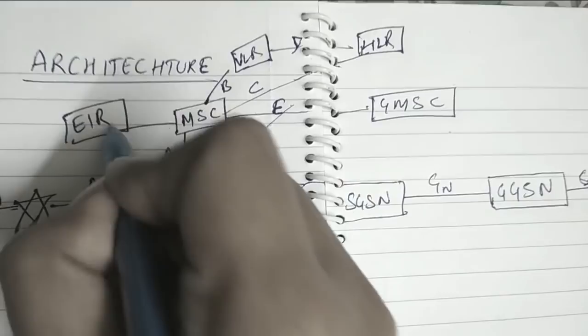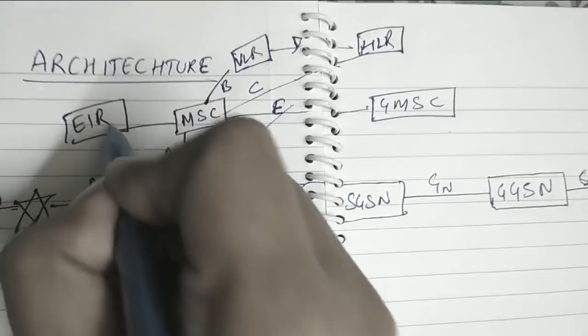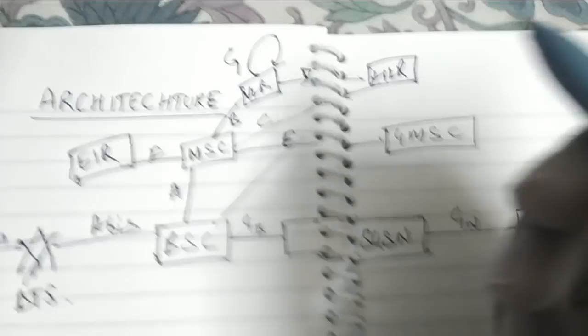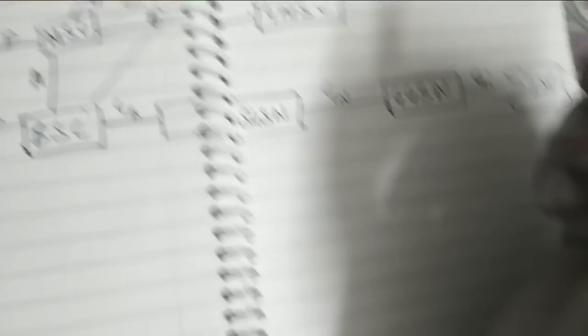VLR and VLR, that can be different VLR in different positions also. These are connected, one VLR can be connected to different VLR by G Interface. So this is our basic Packet Core and Circuit Core Part.